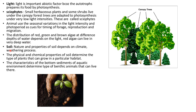The next abiotic factor is soil. The nature and properties of soil depend on climate, weathering process, etc. The physical and chemical properties of soil determine the type of plant that can be grown in a particular habitat — for example, growing an apple in Mumbai is not possible because it requires the soil properties mostly present in snowy areas like Kashmir. The characteristic of bottom sediments in aquatic environments determines the type of benthic animals that can live there.